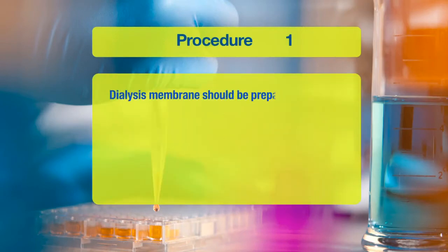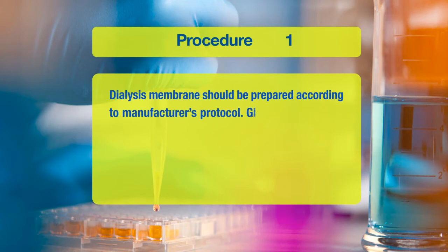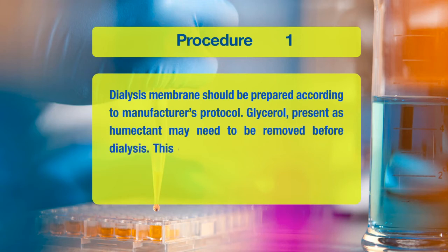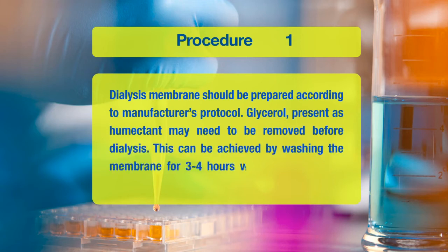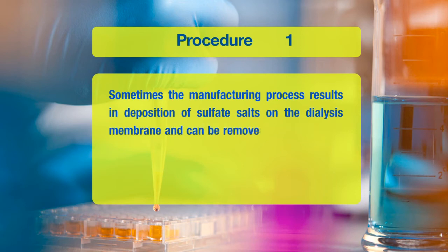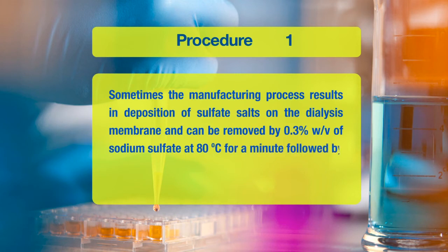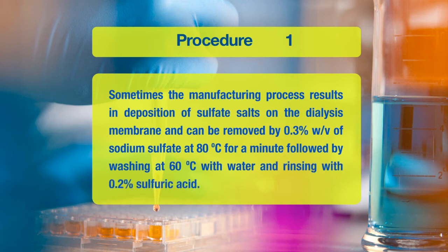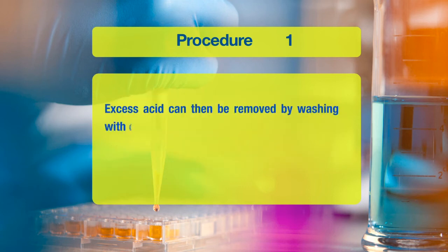First, the dialysis membrane should be prepared according to the manufacturer's protocol. Glycerol present as a humectant may need to be removed before dialysis. This can be achieved by washing the membrane for 3 to 4 hours with double distilled water. Sometimes the manufacturing process results in deposition of sulfate salts on the dialysis membrane, which can be removed by 0.3% sodium sulfate at 80 degrees centigrade for a minute, followed by washing at 60 degrees centigrade with water and rinsing with 0.2% sulfuric acid. Excess acid can then be removed by washing with clean water.